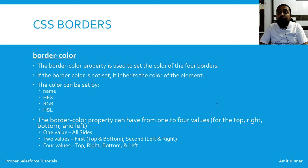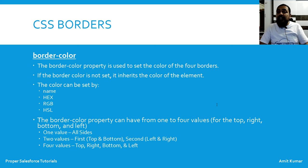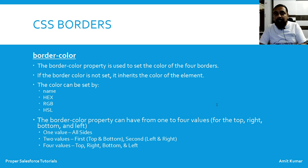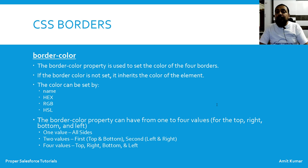The border-color property can also have one to four values. If one value is specified, it applies to all sides. If two values are specified, the first is for top and bottom, and the second is for left and right. If four values are specified, the order is top, right, bottom, and left.